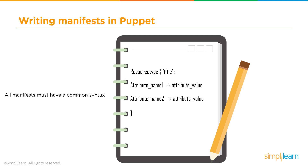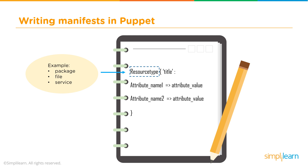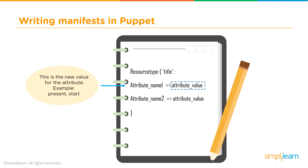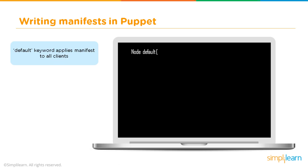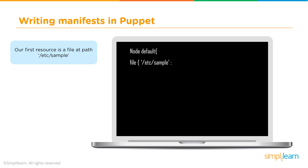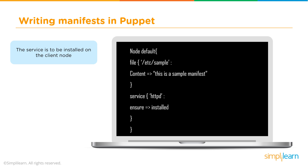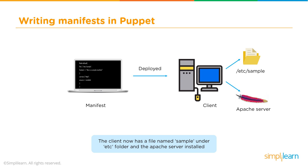If we look at how a manifest is actually written, it uses a very common syntax. If you've done any work with Ruby or configuration of systems in the past, this may look very familiar. You start with a resource type such as package, file, or service, give it a name, then define the features to be set such as IP address, and write a command such as present or start. A manifest can contain multiple resource types. The default keyword applies a manifest to all clients. For example, you can create a file path that creates a folder called 'sample' inside 'etc', write specified content into a file posted into that folder, trigger an Apache service, and ensure that Apache service is installed on a node. When you write and deploy this manifest to a client machine, a new folder will be created with a file inside it and an Apache server will be installed — and you'll get exactly the same results on any machine you deploy it to.